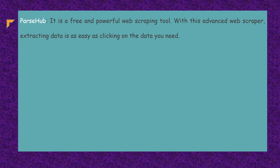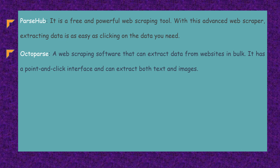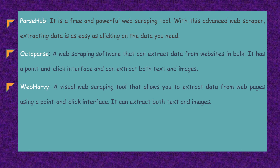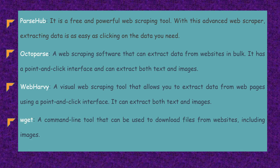It is a free and powerful web scraping tool. With this advanced web scraper, extracting data is as easy as clicking on the data you need. Octopus is a web scraping software that can extract data from websites in bulk. It has a point-and-click interface and can extract both text and images. With Harvey is a visual web scraping tool that allows you to extract from web pages using a point-and-click interface; it can extract both text and images. Wgate is a command-line tool that can be used to download files from websites, including images.